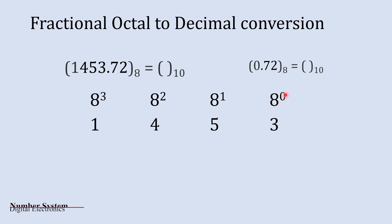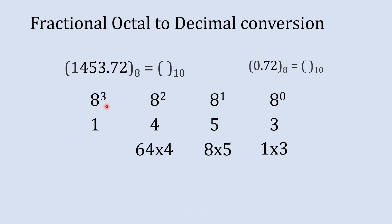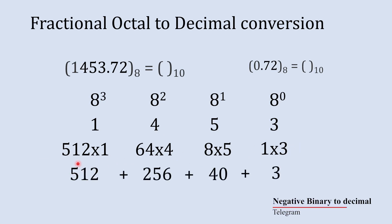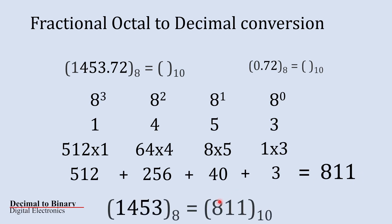So now: 8 to the power 0 times 3 equals 3; 8 to the power 1 times 5 equals 40; 8 to the power 2 times 4 equals 64 times 4 which is 256; and 8 to the power 3 times 1 equals 512 times 1. Adding all these: 512 plus 256 plus 40 plus 3 equals 811. So 811 is the decimal equivalent to octal number 1453.